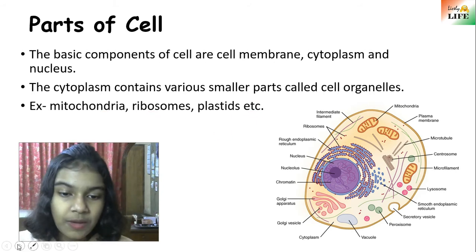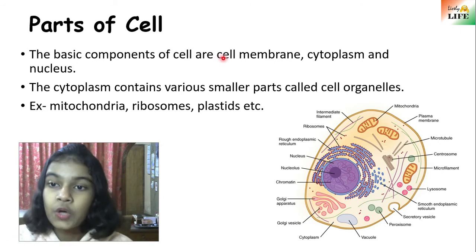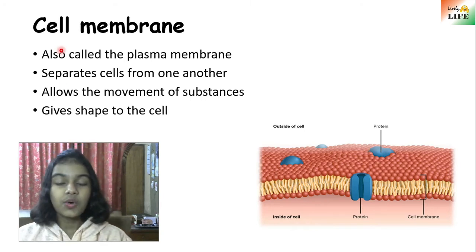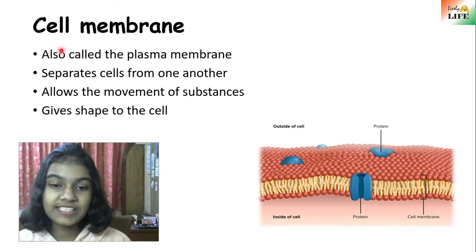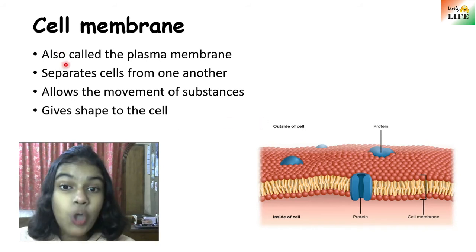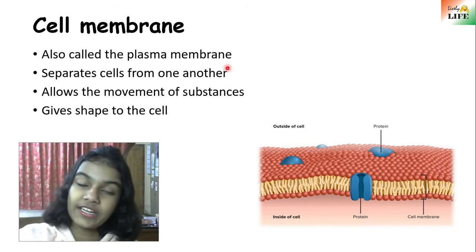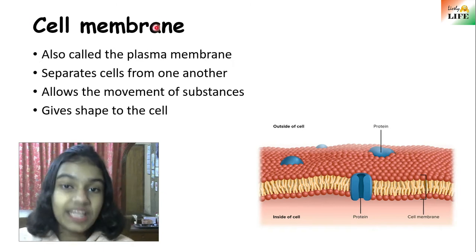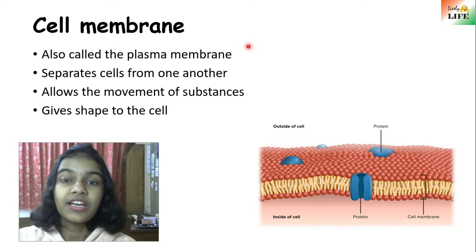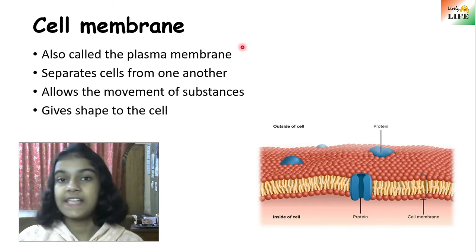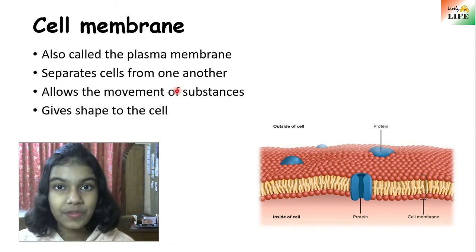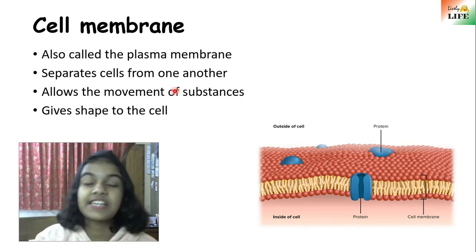First we're going to start with cell membrane. Cell membrane is the outer part of a cell and it is also known as the plasma membrane. The function of the cell membrane is that it separates cells from one another and also from the outside environment.